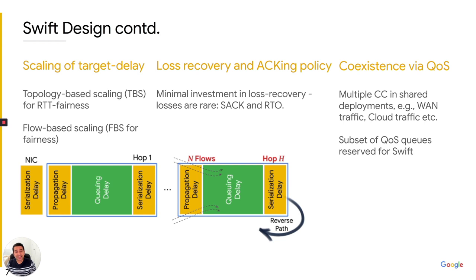The target delay that Swift uses is not static. A flow traverses h hops and can contend with n flows at the bottleneck link. We scale the target dynamically based on topology to provide RTT fairness, and we also do flow-based scaling to account for random collisions not due to congestion. Happily, we have not invested much in loss recovery because losses in Swift are extremely rare. We use SACK for fast recovery and an RTO mechanism for cases where fast recovery is not possible, such as when ACKs get lost.